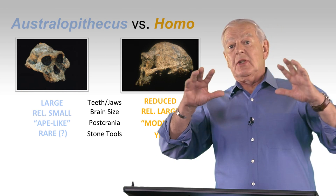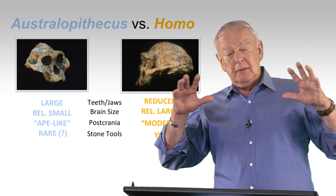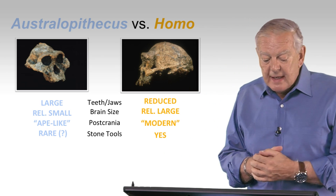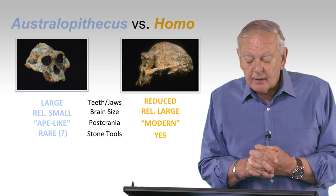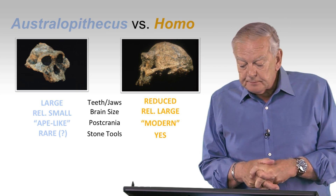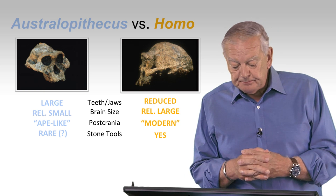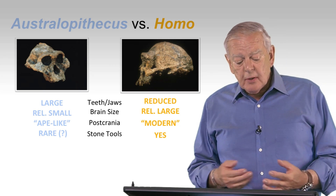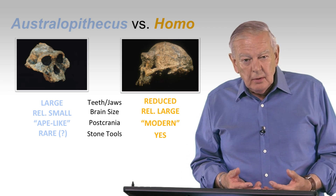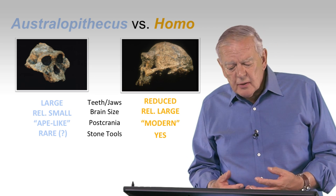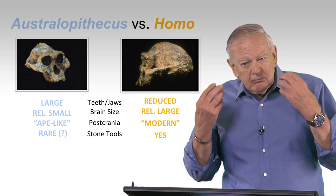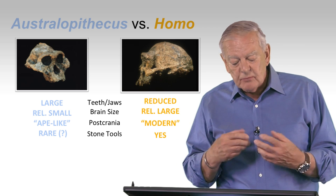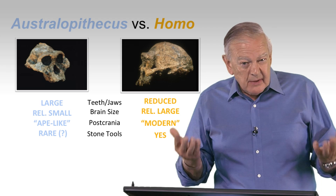If we step back and have a broader overview of Australopithecus versus Homo — the classic 406 skull on the left versus a classic early Homo cranium on the right — in terms of teeth and jaws, in Australopithecus they were generally large: large teeth, large jaws, powerful jaws. In Homo, much more reduced in terms of size and thickness. Size of teeth reduced.